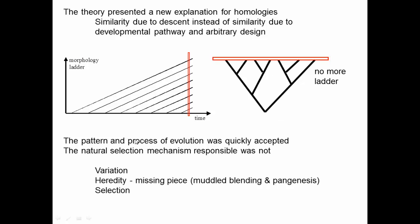The pattern and process of evolution were quickly accepted. There were many people at the time just waiting for the right book — the examples were all there, people just didn't have the right framework. When 'On the Origin of Species' came out, many professional biologists read it and thought it was so obvious they wished they had written it. However, the natural selection mechanism itself was not immediately accepted by everybody.